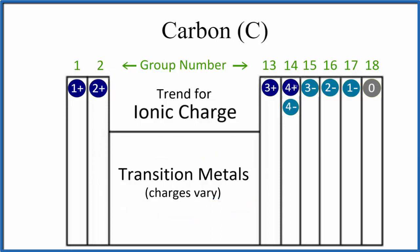3+ and 4+, or 4-, and so on. Carbon is right here in group 14, so we would expect it would have a 4+ or 4- ionic charge when it bonded with other elements. That means it would either lose four electrons to become 4+, or gain four electrons to become 4-.